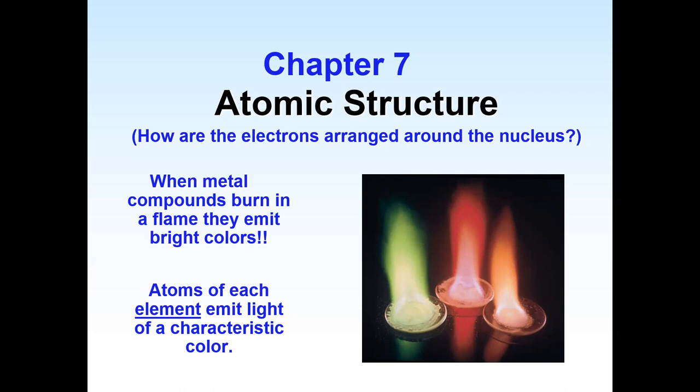We'll be learning about the properties of electrons and the properties of light in general, because the color of light that we see is dependent on the energy of that light. So we'll be learning a bit about the electromagnetic spectrum, about what wavelengths of light we can see, as well as the other parts of the electromagnetic spectrum such as UV light, infrared light, microwaves, those kinds of things. We'll be talking about how we can calculate the energy of light given the color, and also what colors would be produced by different atoms given the energies of their electrons.